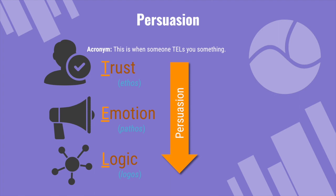In order of persuasion, trust comes first — trust is the most persuasive of these three aspects. Then comes emotion, and then logic. Now, in terms of critical thinking, it goes in reverse order: logic, emotion, and trust.